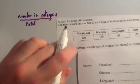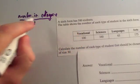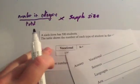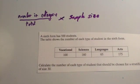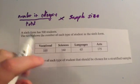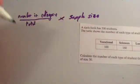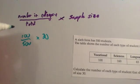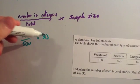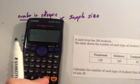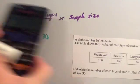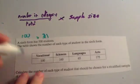For vocational, there are 100 students doing vocational out of 500, so that's 100 out of 500 — a fifth — times by the sample size of 30. Using a calculator: 100 divided by 500 multiplied by 30 equals 6. So in our sample, we would want to take six vocational students.